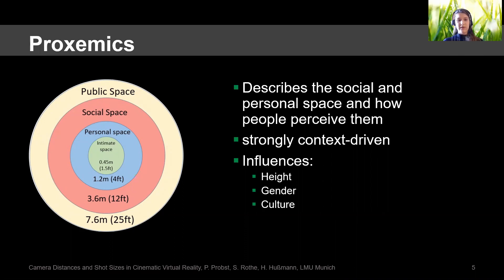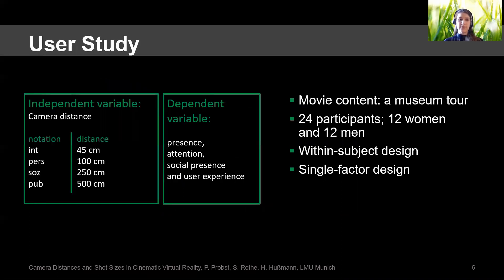Hall defined four different proxemics zones: the intimate space, the personal space, the social space, and the public space. We used these four proxemics spaces in our user study as the independent variable, which was the camera distance. These distances you can see in the left-side camera view.